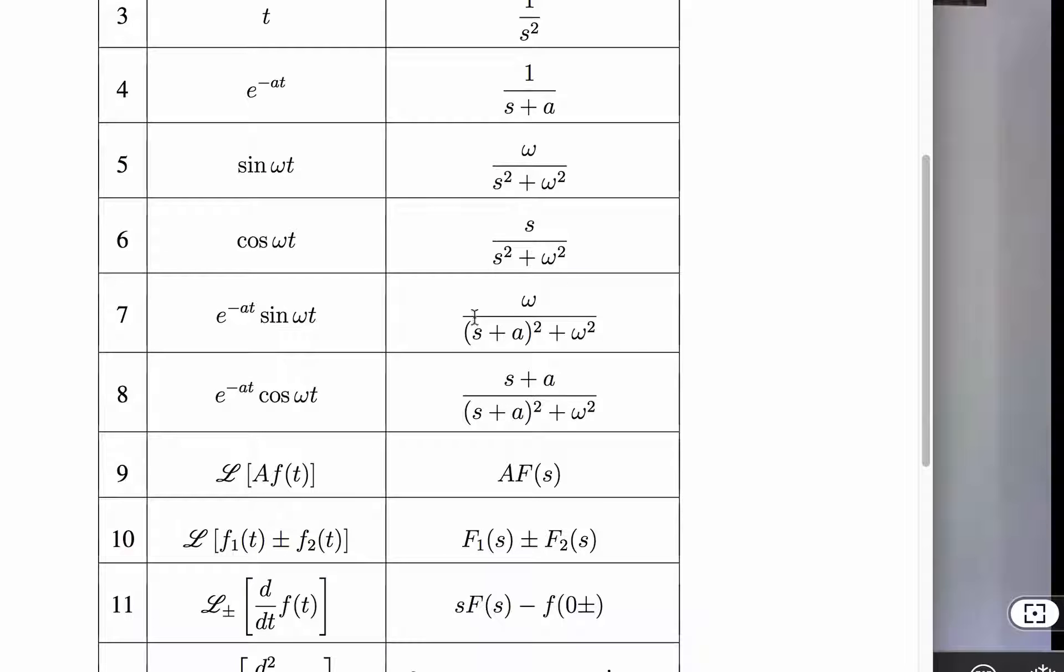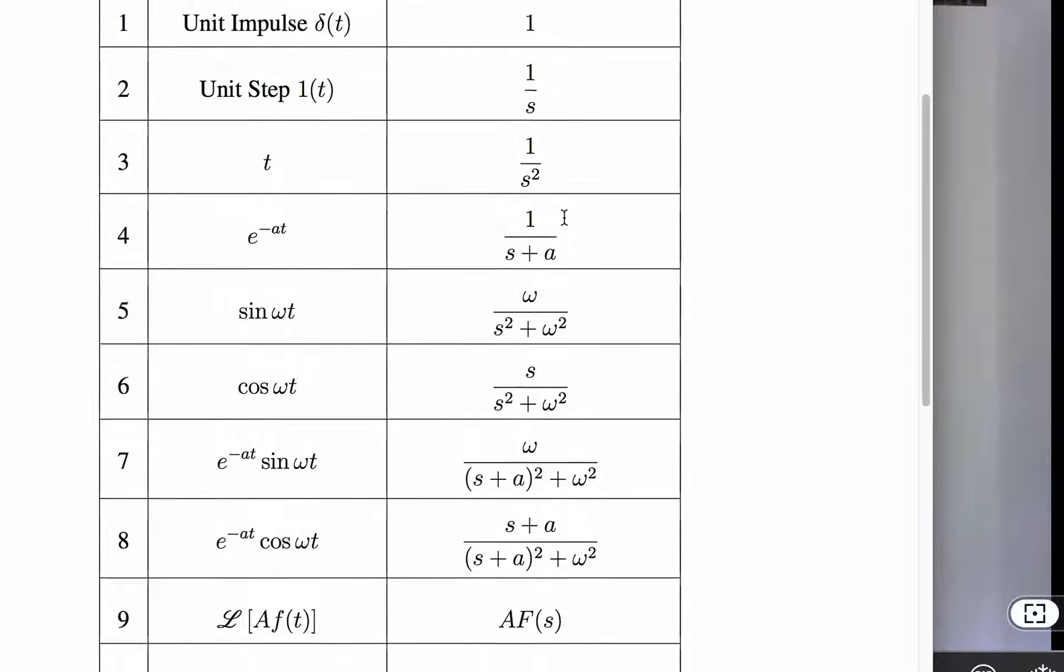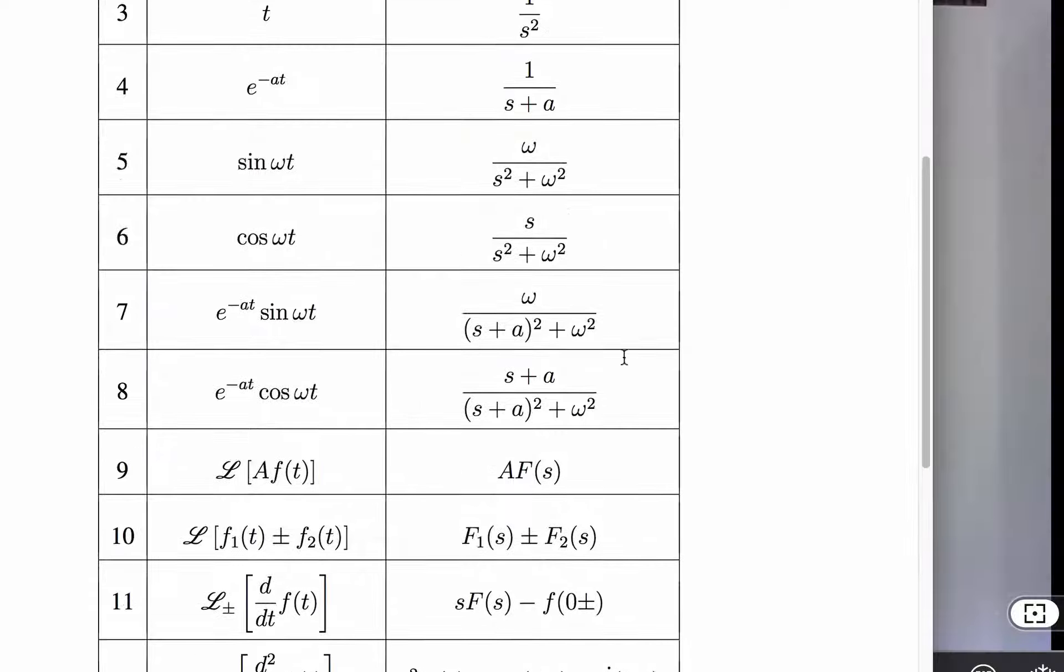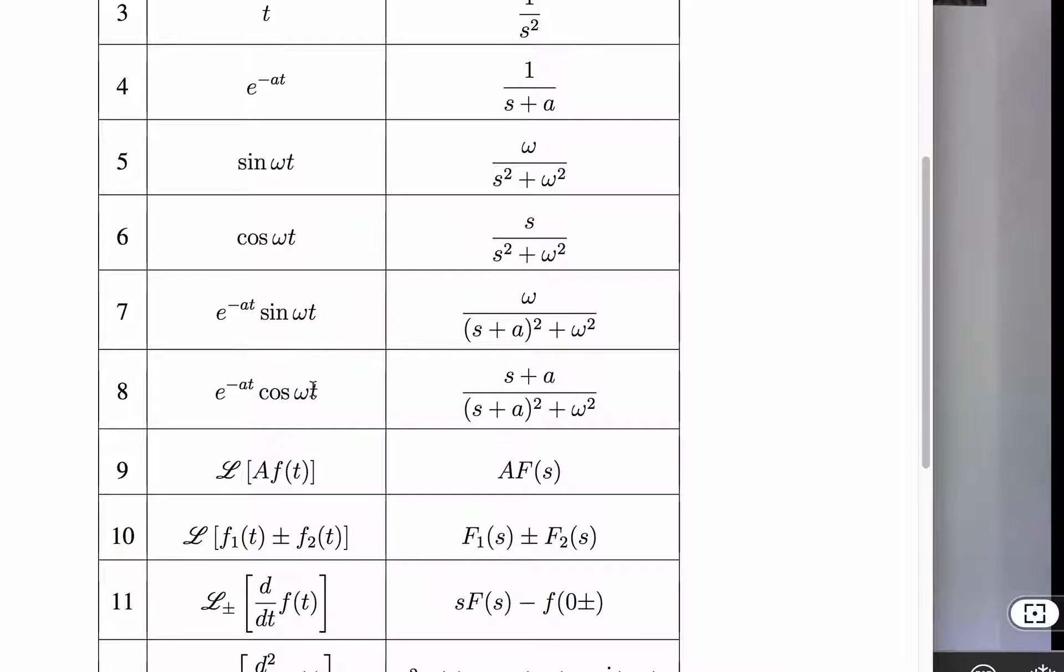The only options that have quadratic terms, if we've got purely quadratic terms that are purely imaginary for sine and cosine, otherwise our only option is this decaying sine and decaying cosine that has this denominator.